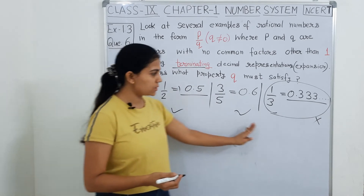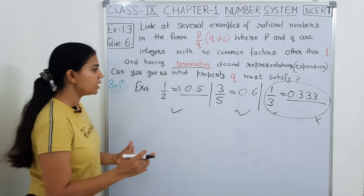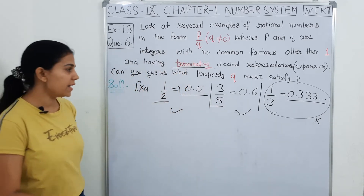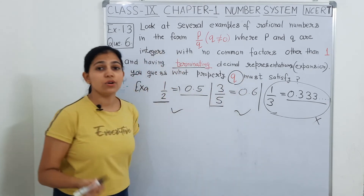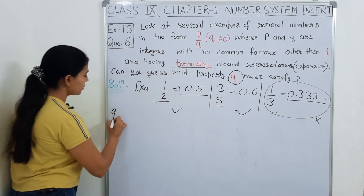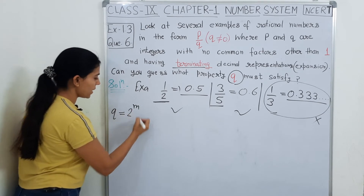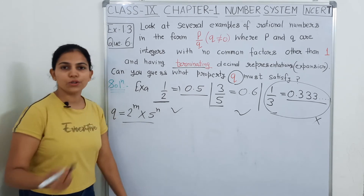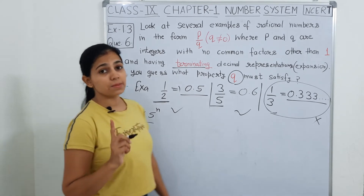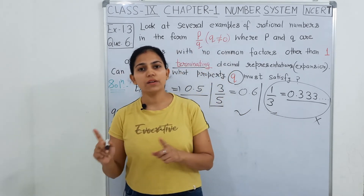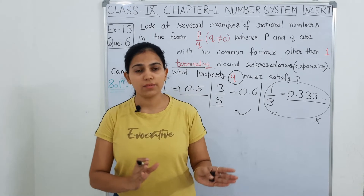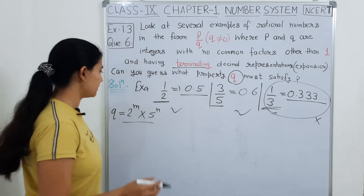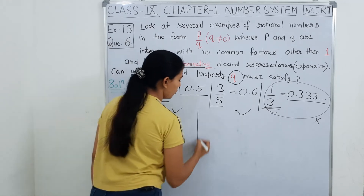तो ये वाले दोनों examples तो work करेंगे इस question में, बट ये वाला example जो है work नहीं करेगा, क्योंकि इसकी decimal expansion जो है वो non-terminating repeating है. तो आप देखो, अगर हम इन सब examples को ध्यान से observe करें, तो हमें मिलेगा जो हमारा Q है — वो या तो 2 है, या तो 5 है. तो Q कैसा होना चाहिए — वो या तो 2 की powers में हो, या फिर 5 की powers में हो, या फिर दोनों की powers में हो. तभी decimal expansion terminating आएगी.